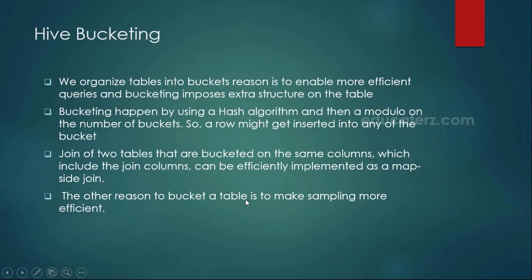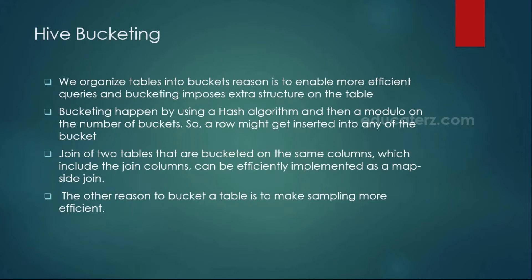Another use case for bucketing is when multiple tables need to be joined. You require a join column — in a normal scenario we call that a foreign key and primary key. If those join columns are already using bucketing, it improves performance. In real-time scenarios, if you are joining multiple tables, you can put bucketing on top of those join columns and execute the query, which helps you write more efficient queries internally.